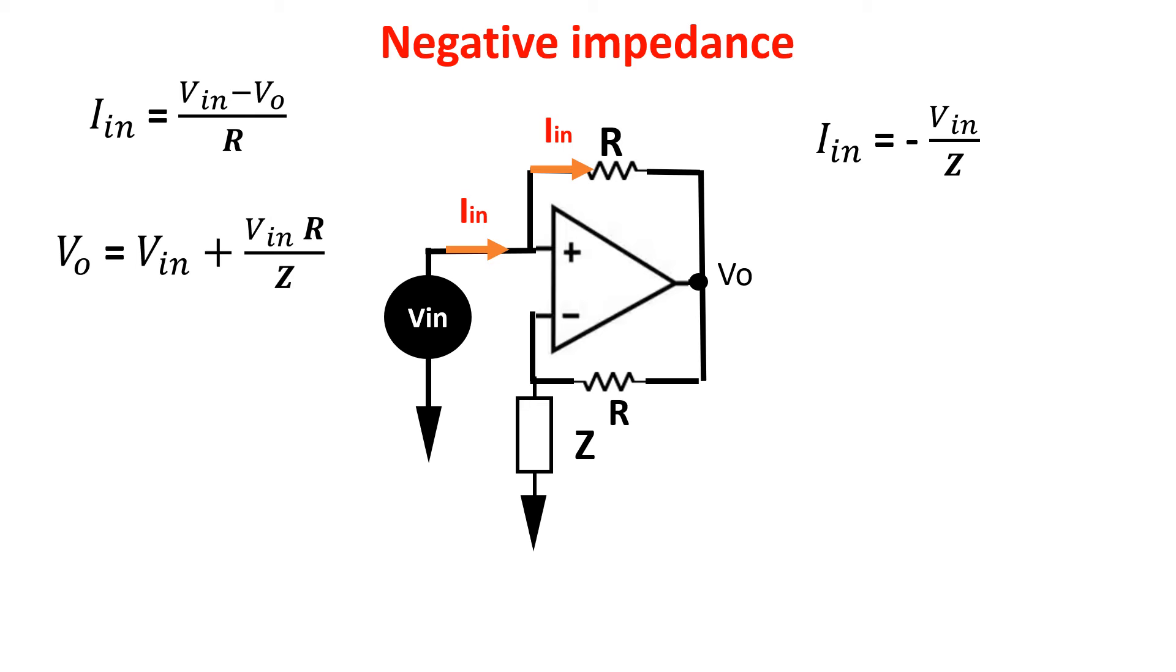So the impedance is minus z. So we can create, for example, a negative capacitance used to simulate the behavior of inductors, without the large space needed by inductors.